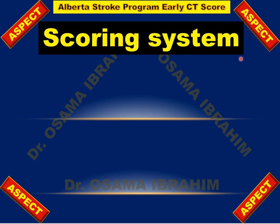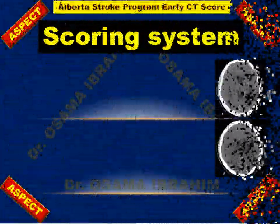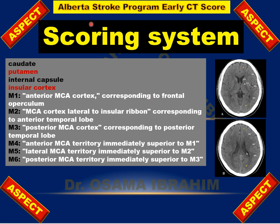What is the scoring system? A segmental assessment of the middle cerebral artery vascular territories is made, and one point is deducted from the initial score of 10 for every region involved. So there are 10 areas, and we deduct for each area showing abnormality to arrive at the final score.